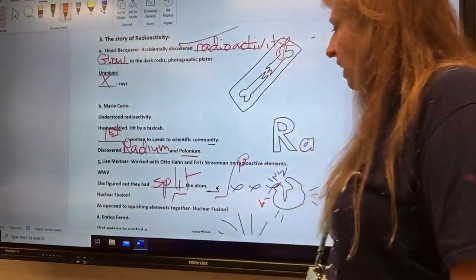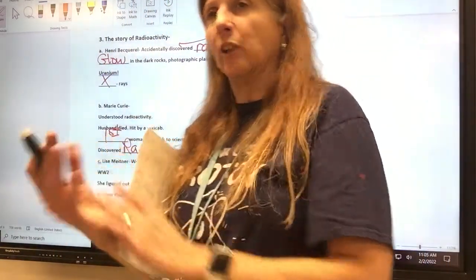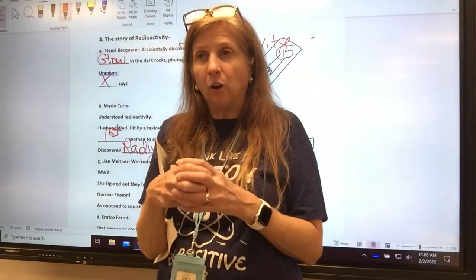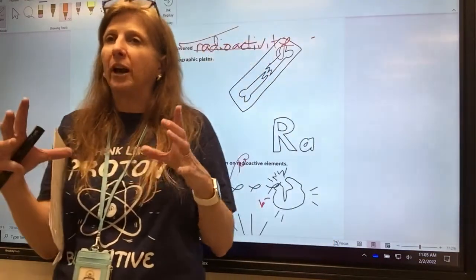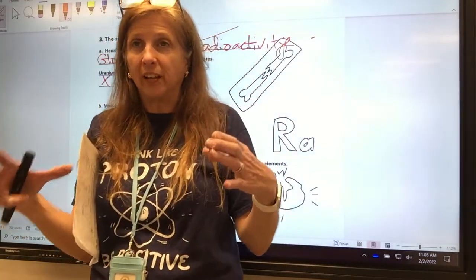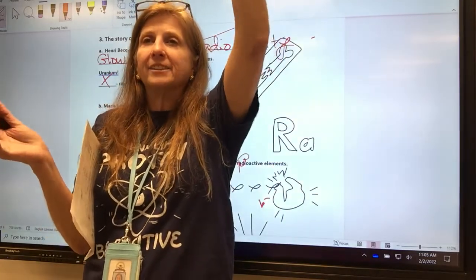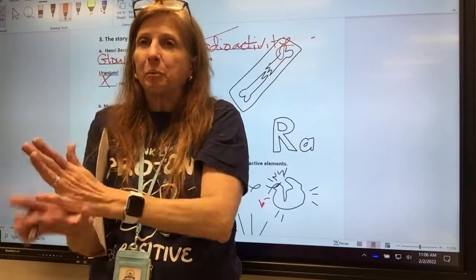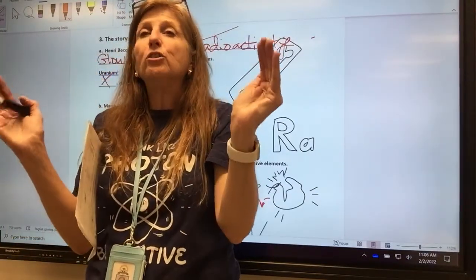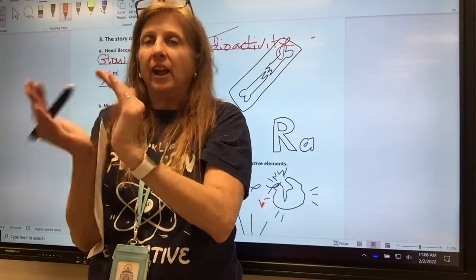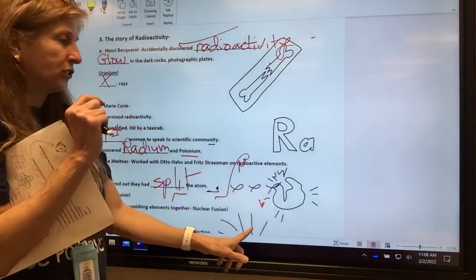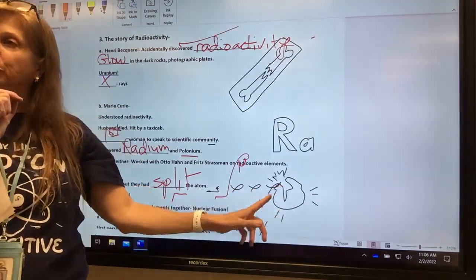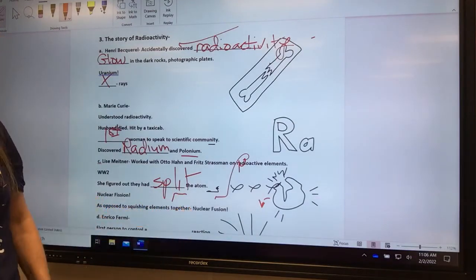She figured out they had split the atom. Nuclear fission. Nuclear fission is splitting an atom. Nuclear fusion is putting an atom together. You can use both to make bombs. But you need to know the difference. So imagine a fish. You got a fish? Now imagine your hand is a knife and you cut the fish in half. So fission, fission, is splitting the atom. Fusion is putting little atoms together. And that's what's happening in the sun and other stars.